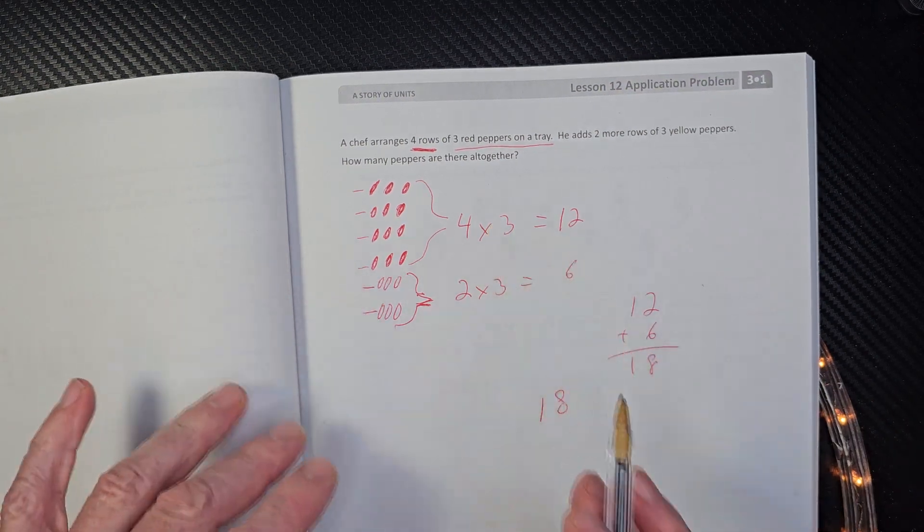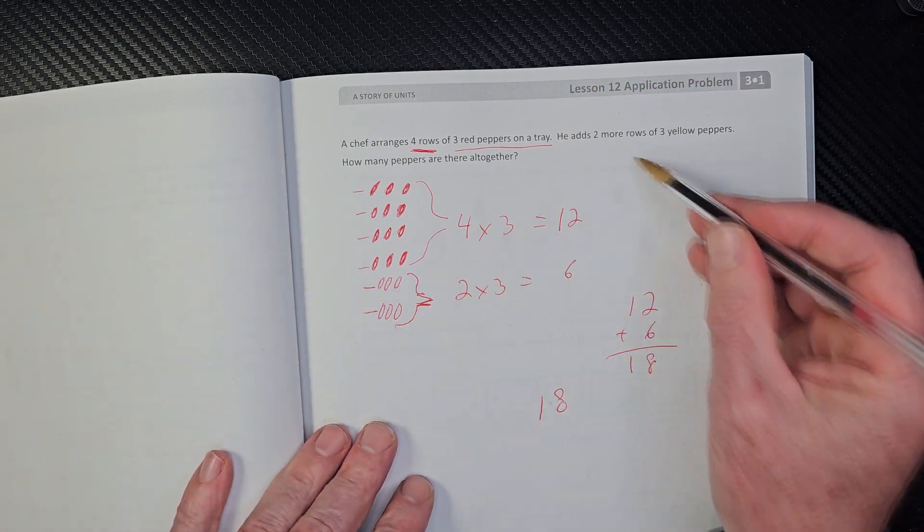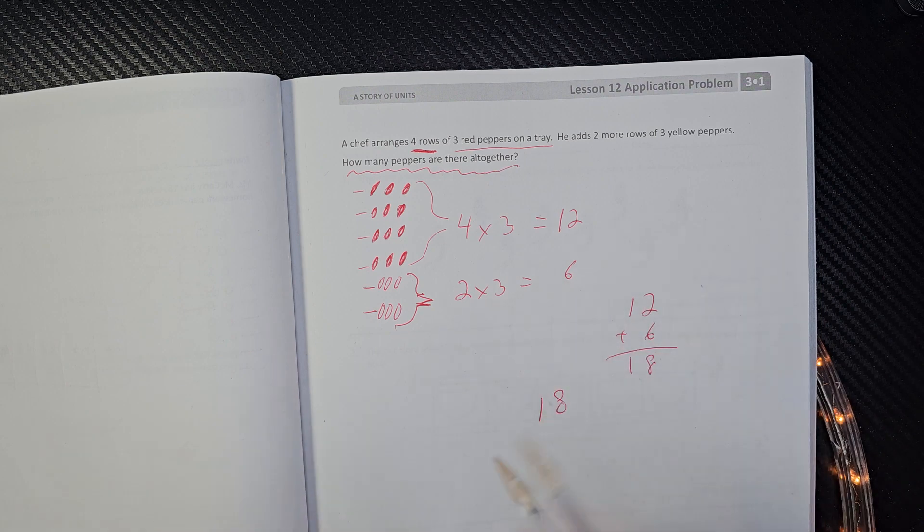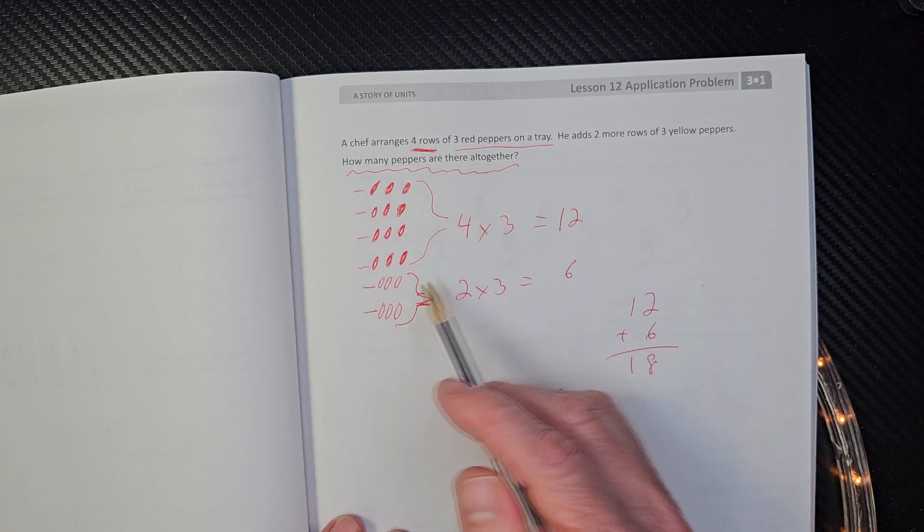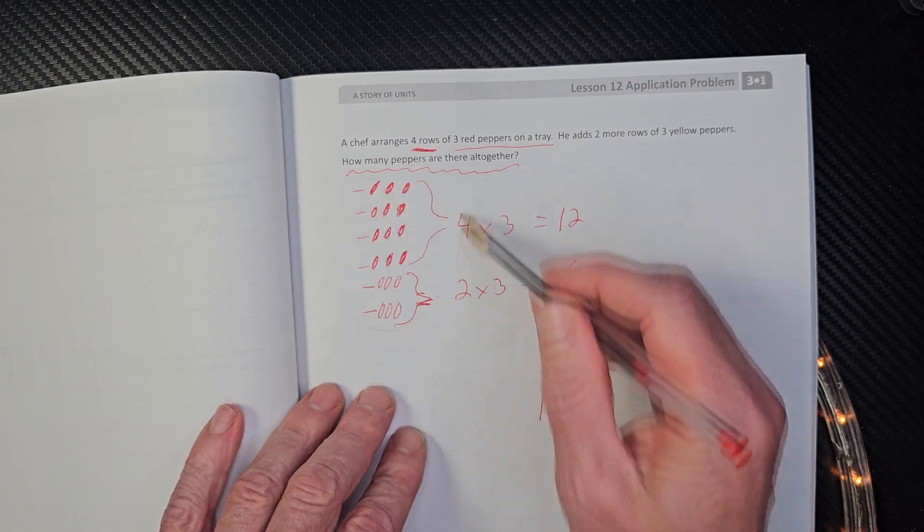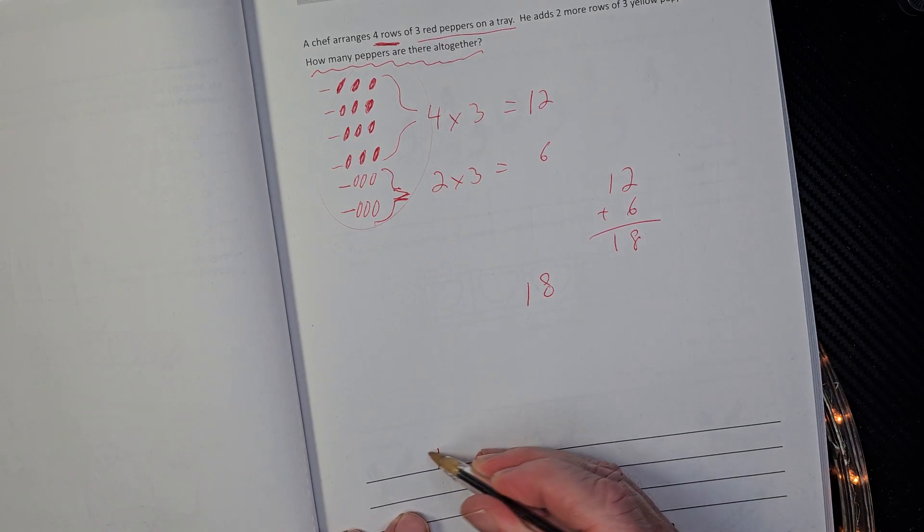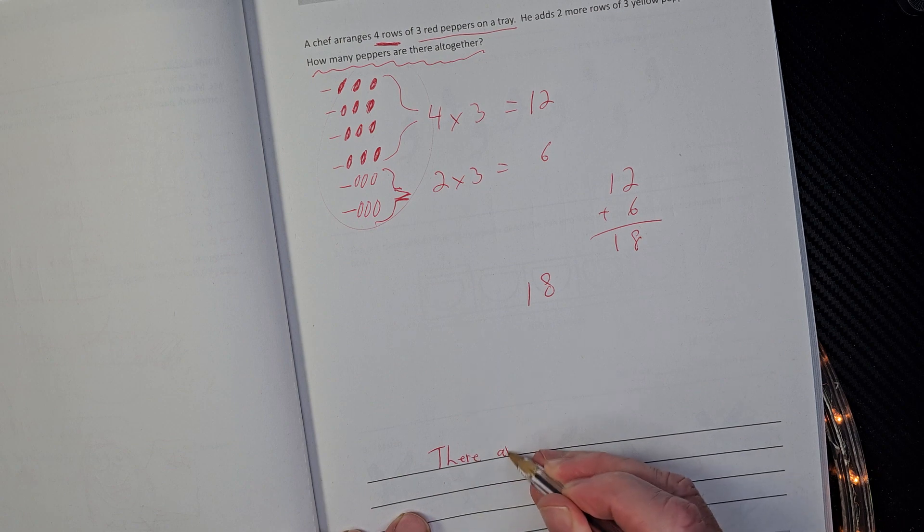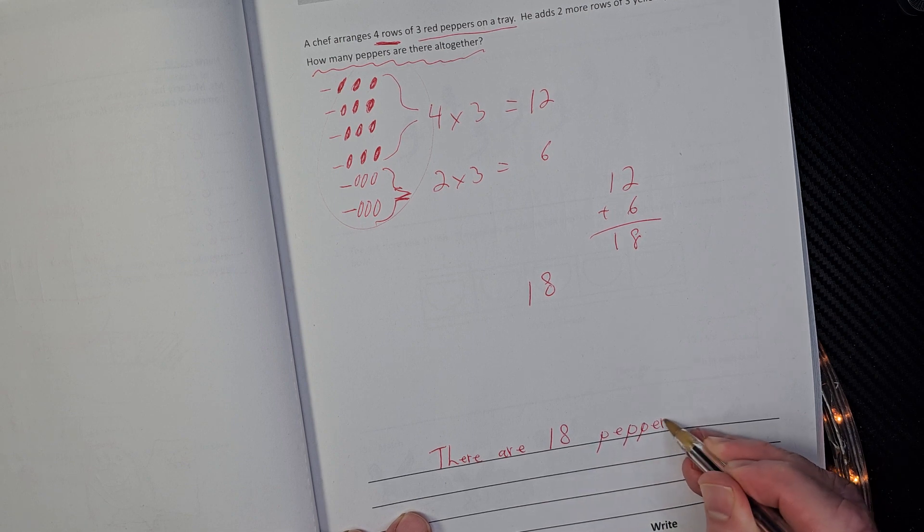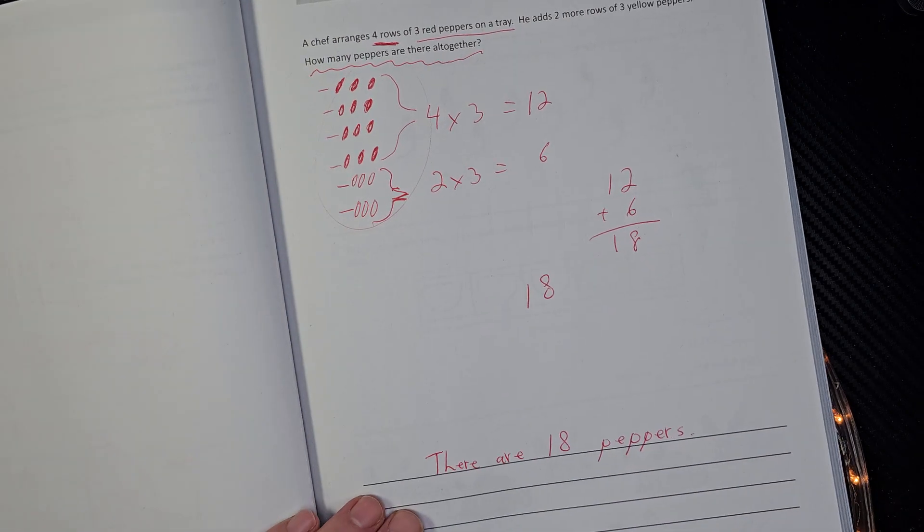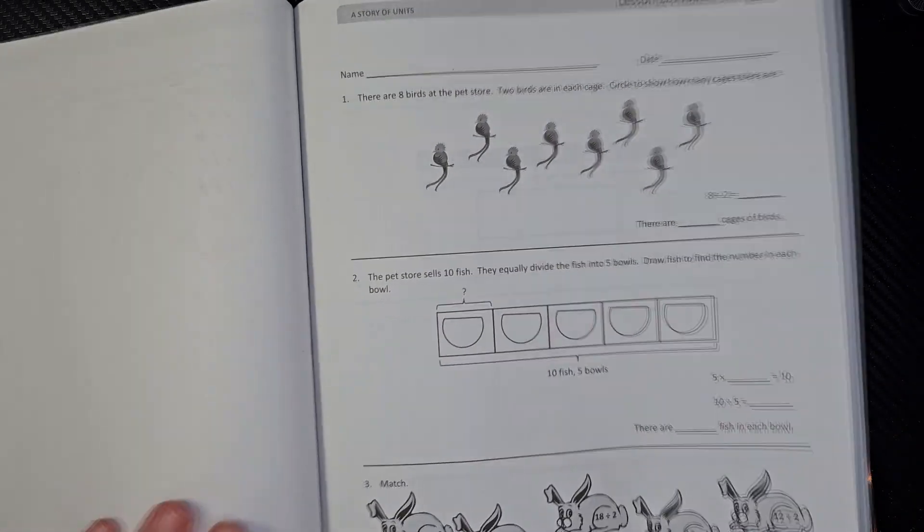When you're drawing story problems, get crazy. Just draw all kinds, make marks, do all kinds of stuff like that. Make squiggly lines for the questions. Mark it up. Have fun with all that. So this chef, he's going to make some kind of cool food with all these peppers. So here's our sentence right there. How many peppers are there all together? There are 18 peppers.